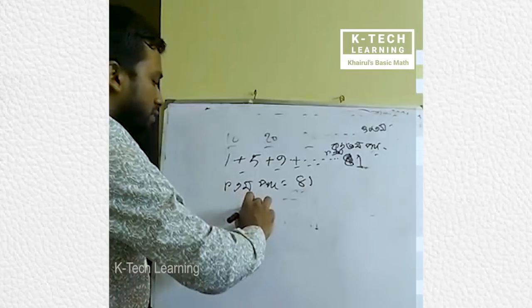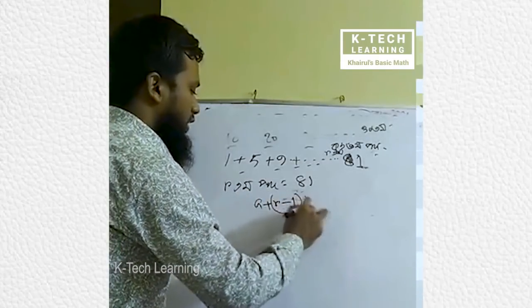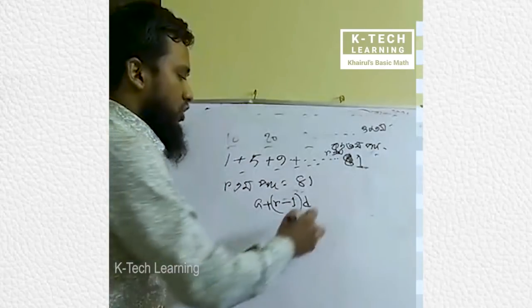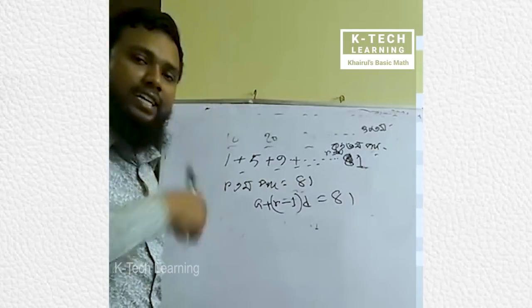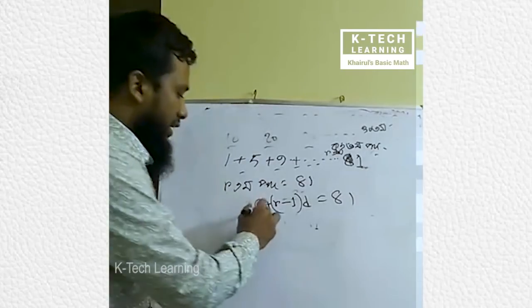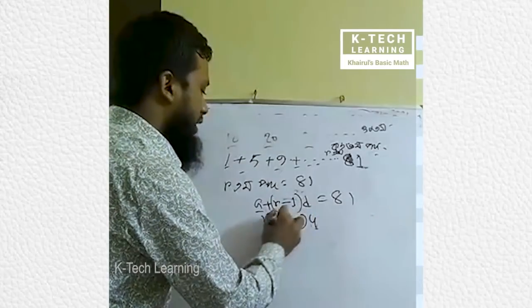So, a plus r minus 1 into d, a minus 1 into d, a minus 1 into d. So we can learn the math. So a minus 1, d minus 4, but r minus 1, and a minus 1. So we have a practical thinking.